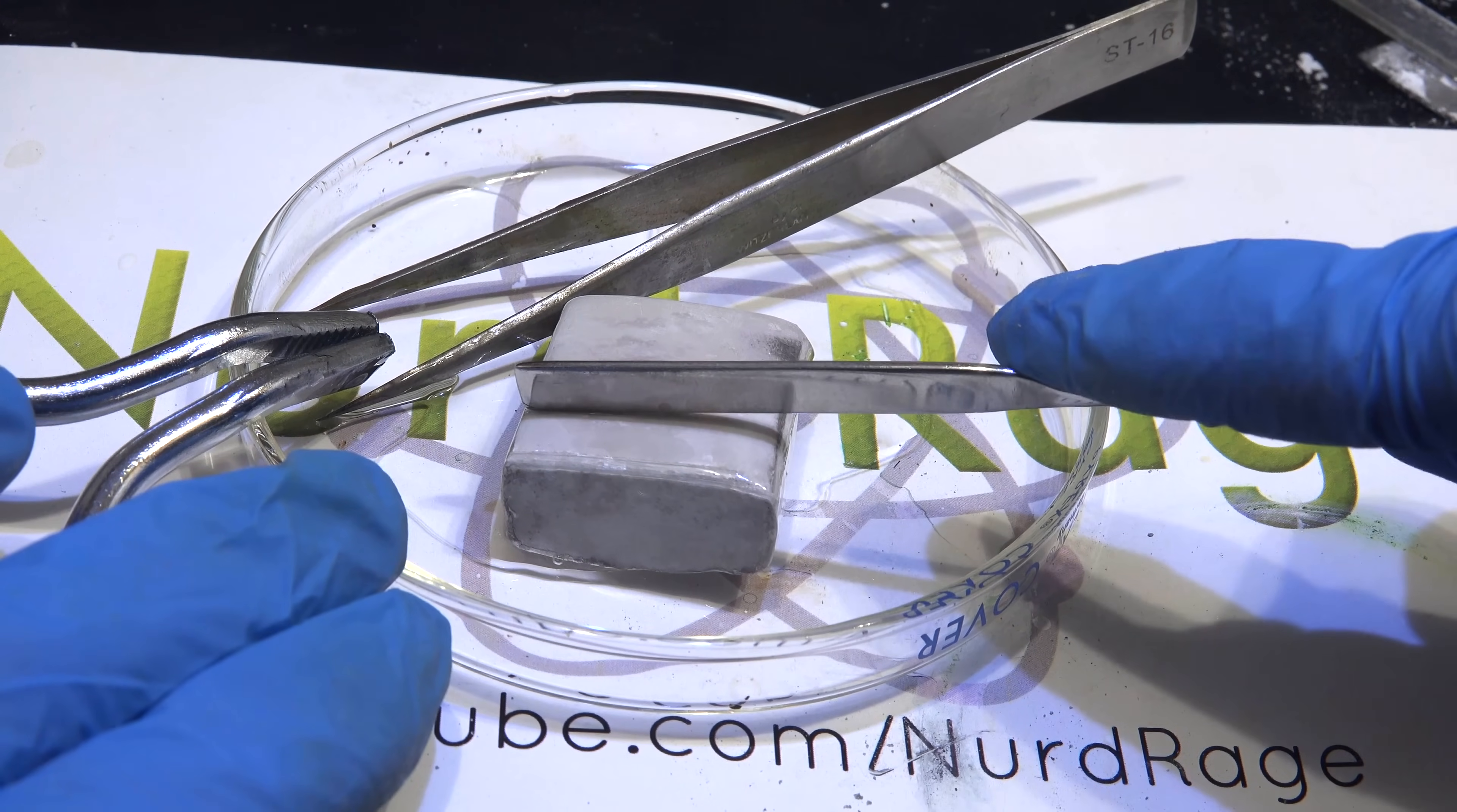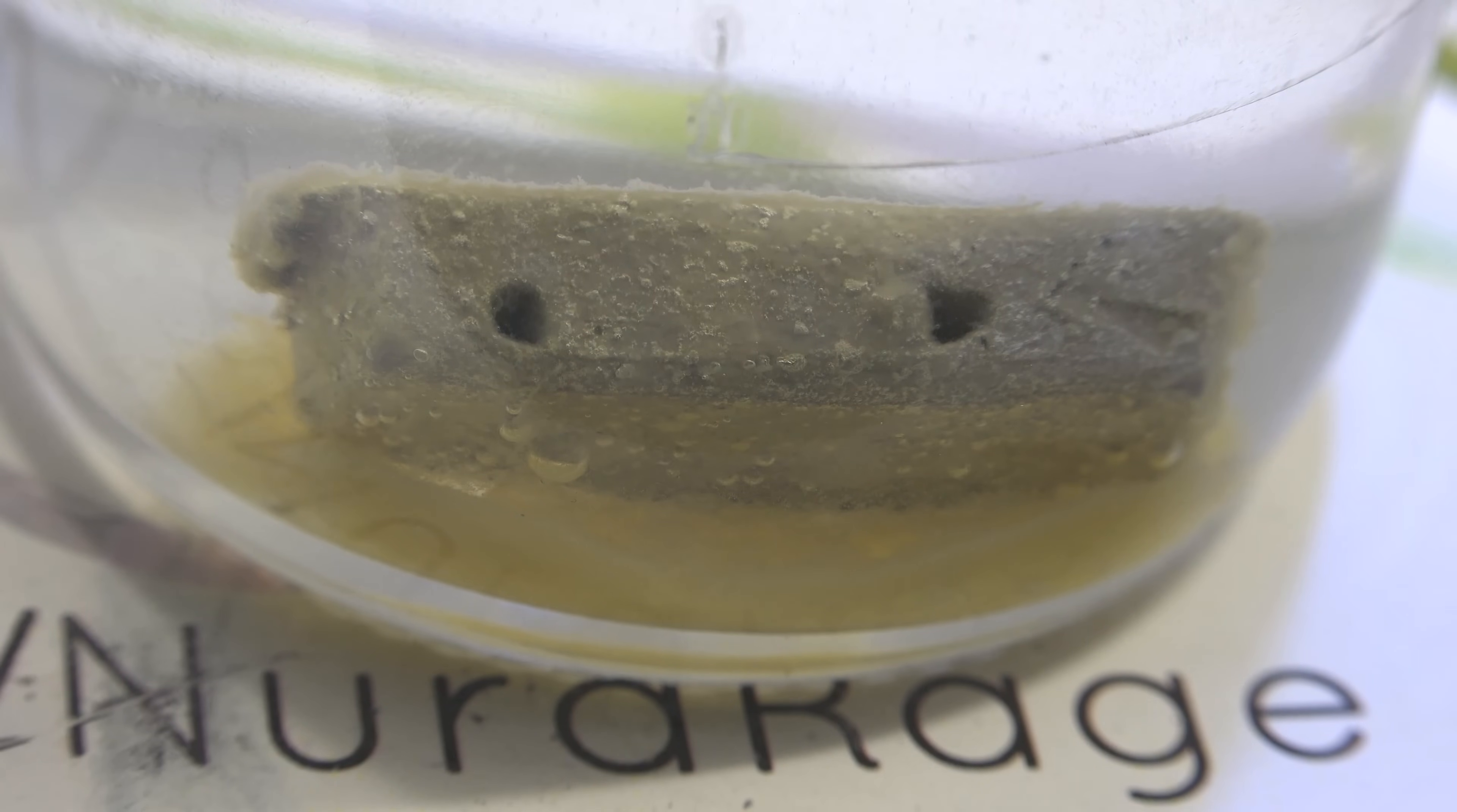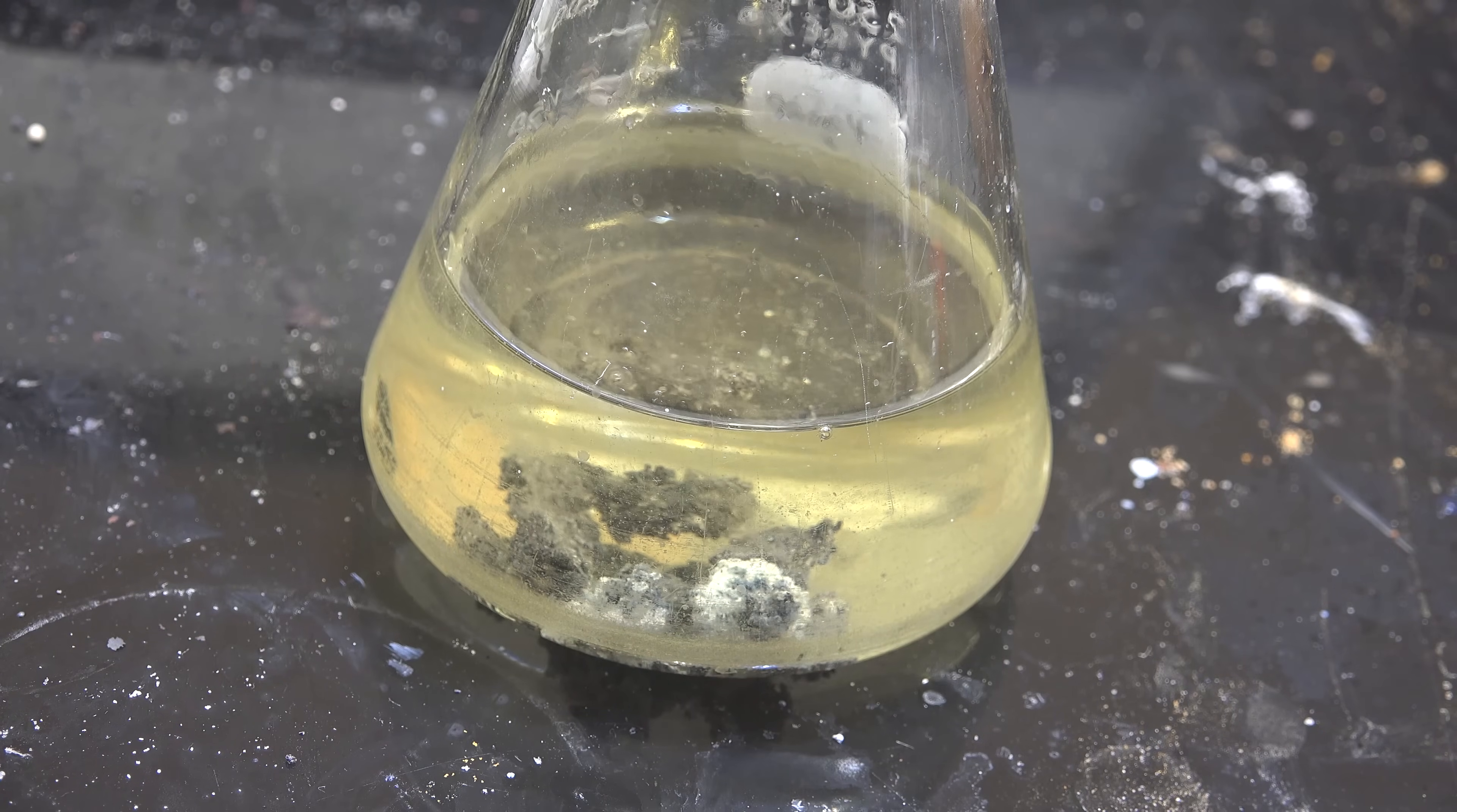Greetings fellow nerds. Sodium metal is quite famous among chemists as well as the general public for being flammable and highly reactive. You've seen me use it in previous videos to dry solvents. In another video I showed how to make a sodium magnesium oxide aggregate that could be used as a sodium substitute in many cases.